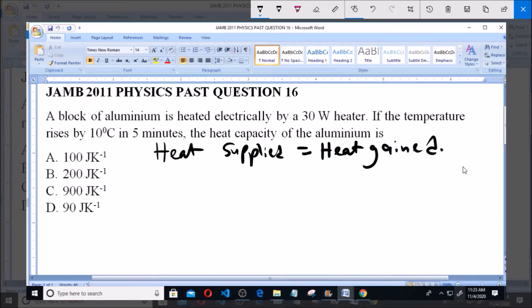Now, heat supplied in this case is the heat supplied by the electrical source, which is in this case the 30 watts heater. So the heat supplied will be equal to P times T, which is the power of the heater multiplied by the time it was heated for.